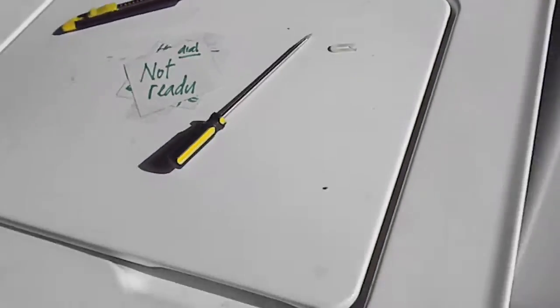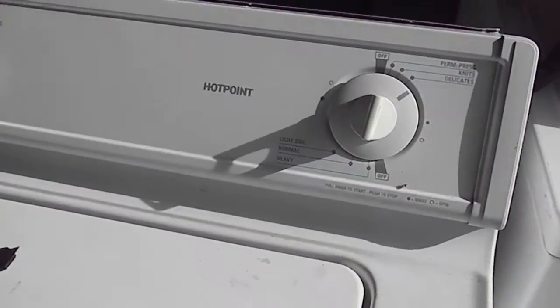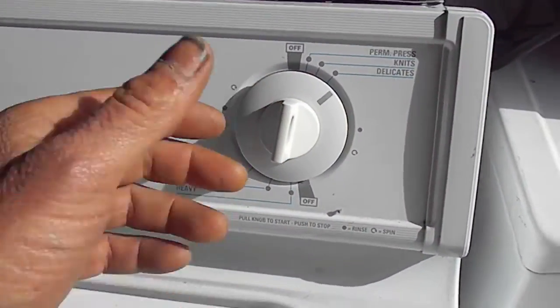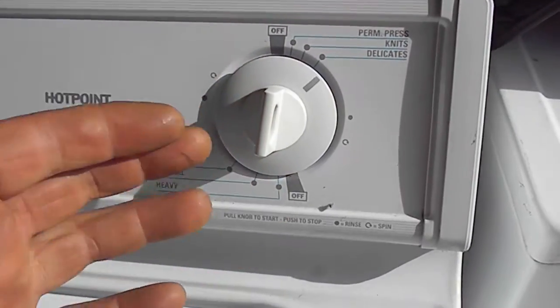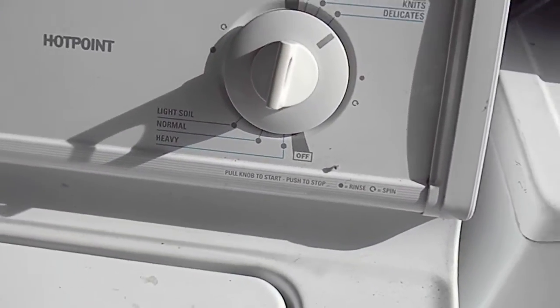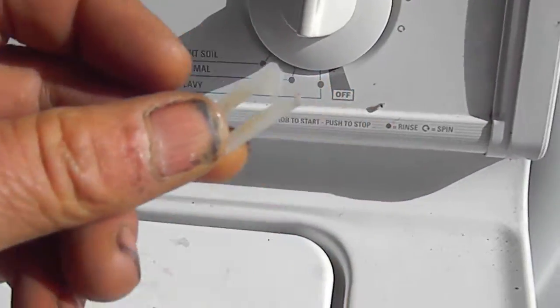Okay, here's your Hotpoint top load washer. What happened is it wouldn't turn. You turn the knob and it wouldn't grab hold. The knob would basically spin freely. There's a little clip that holds the knob on.